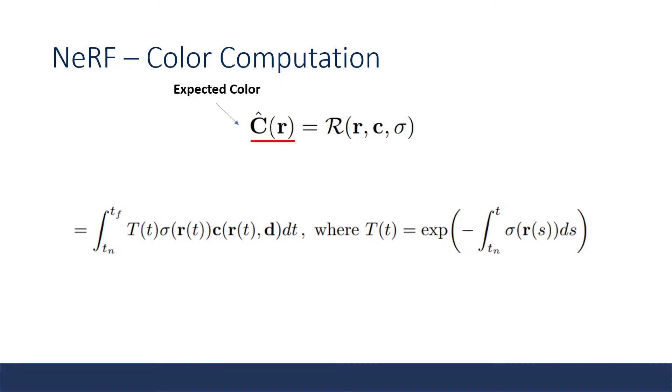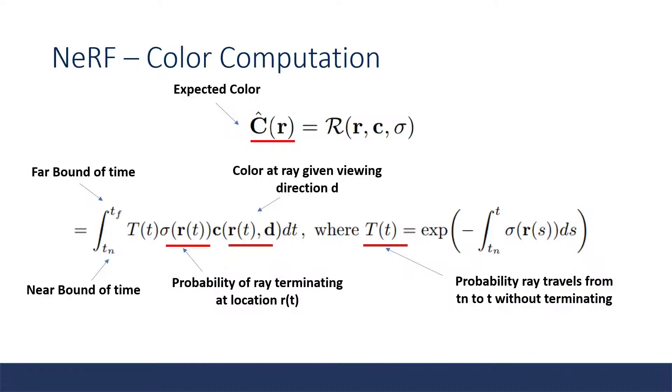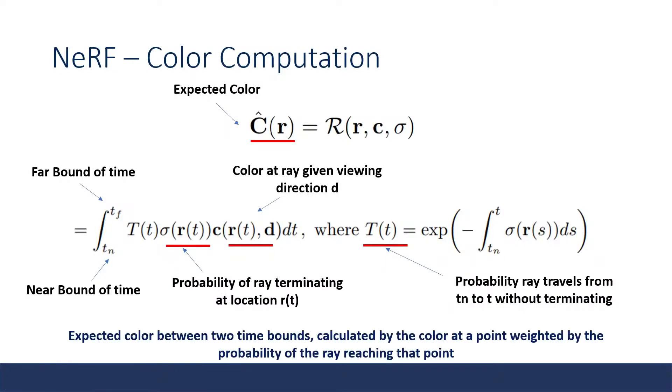This is the formula for volumetric rendering, and this integral can be interpreted as the expected color weighted by the probability of reaching the location of the ray at time t. We have our two color terms: our expected color c-hat and our color at a ray given the viewing direction d. Then across an integral between our far and near bounds of time, we multiply this by the probability of reaching the ray at time t. We observe that T is a probability that the ray travels from start to our current location. We can multiply that by our density at the current location to obtain the probability of our ray being at the current location. As a result, the formula is the expected color between two time bounds calculated by the color at a point weighted by the probability of the ray reaching that point.